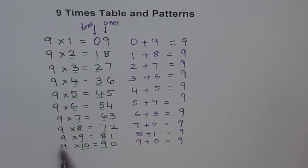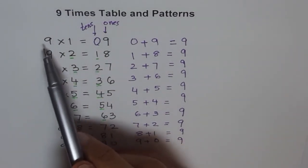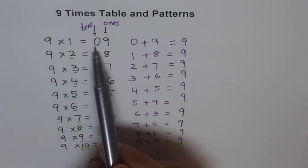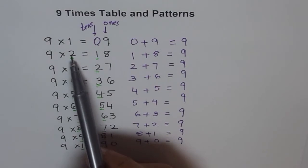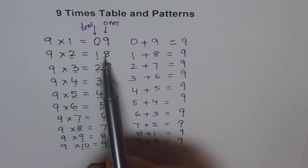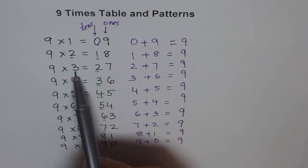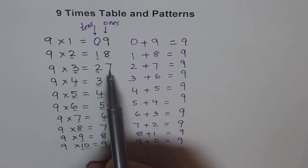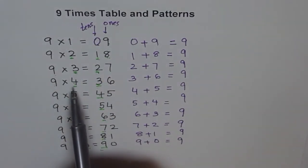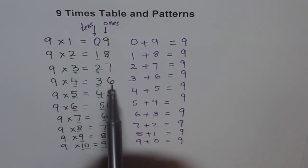That is easy! Now I know my times. To find any result: for 9 times 1, take away 1 to get 0, then 0 plus 9 is 9. For 9 times 2, one less than 2 is 1, and 1 plus 8 is 9, so you get 18. For 9 times 3, one less than 3 is 2, and 2 plus 7 is 9, so 27. For 9 times 4, one less than 4 is 3, and 3 plus 6 is 9, so 36.